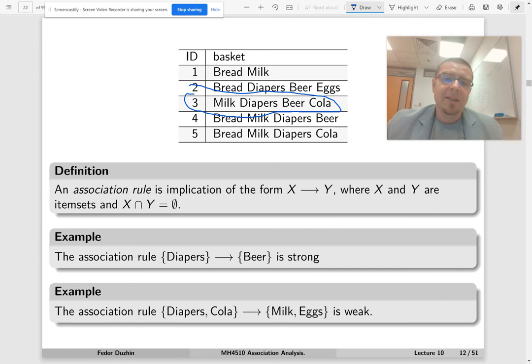Well, milk does, but eggs do not appear. Which means that we can't really say that this is a strong rule. In transactions that contain diapers and cola, milk and eggs do not appear together.